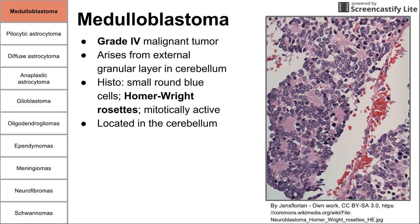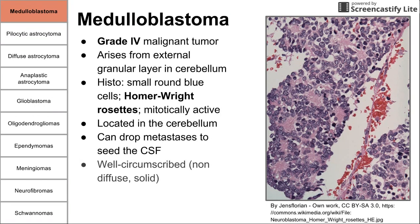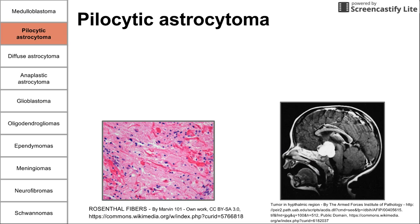These tumors are usually located in the cerebellum below the tectorial line. This is one of the tumors that can drop metastases to seed the CSF — medulloblastoma can seed the CSF. These are usually well-circumscribed tumors; they're not spreading and invading throughout the brain.